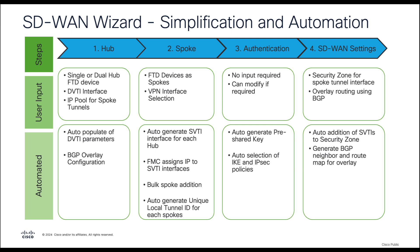The next step is authentication, where we configure the pre-shared key or certificate-based authentication. This step also automates the configuration for the pre-shared key and selects the IKE and IPsec policies, which can be changed if required. Lastly, in step 4, we configure SD-WAN settings, defining the security zone for the spoke tunnel interface along with overlay routing using BGP.